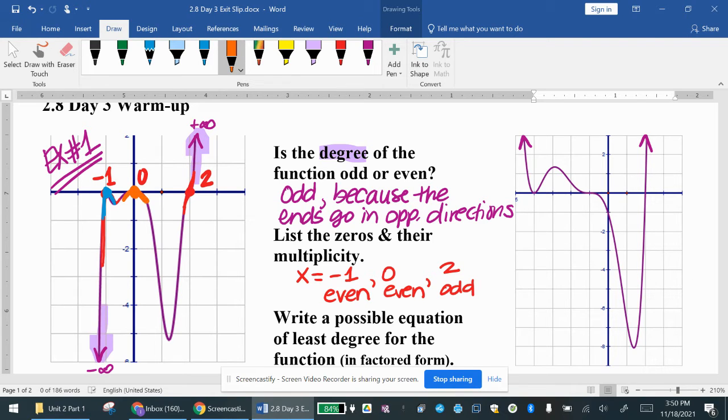Zero, same thing. Touches, it bounces back. However, for this one, it passes through. So if it just touches, it's even. If it goes through, it's odd.